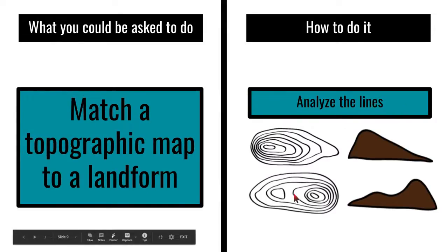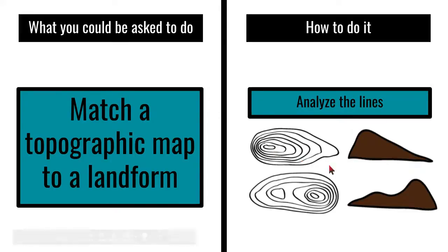Here you can see the side view of what that looks like — two little hills, with this hill higher than the other because it has more circles on the topo map.